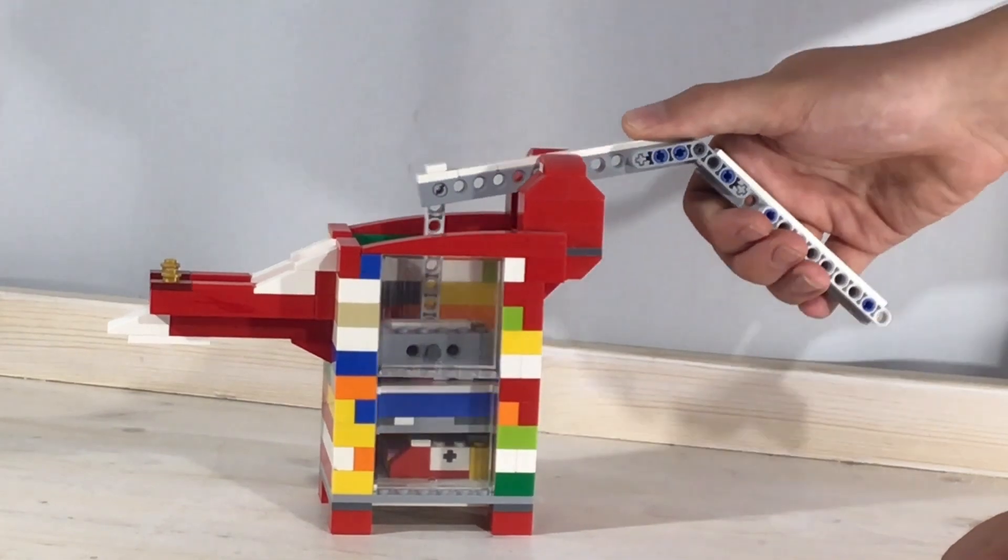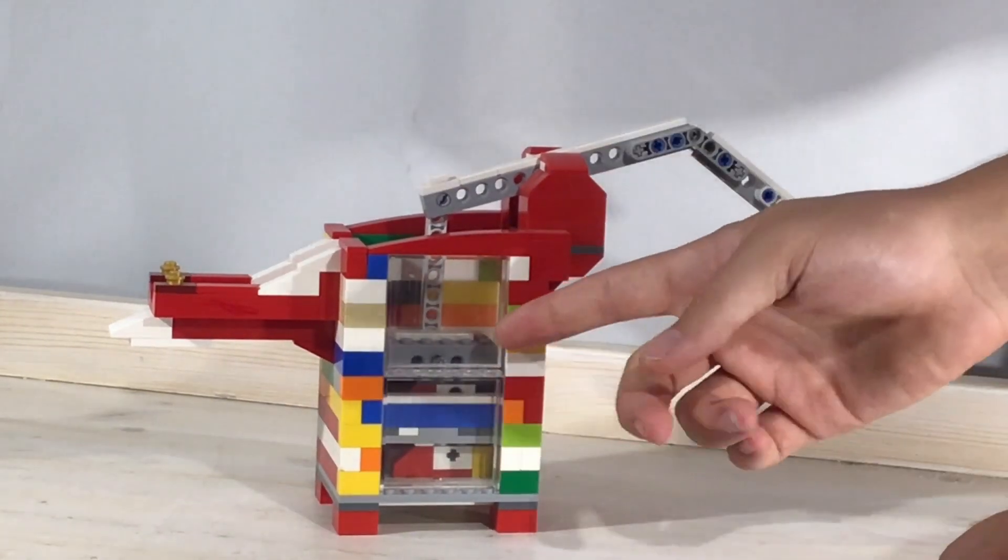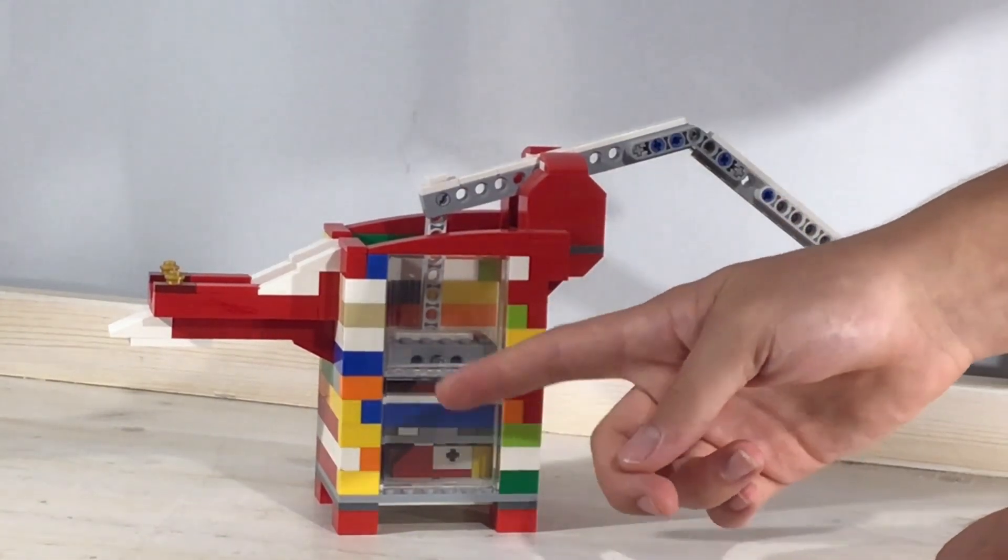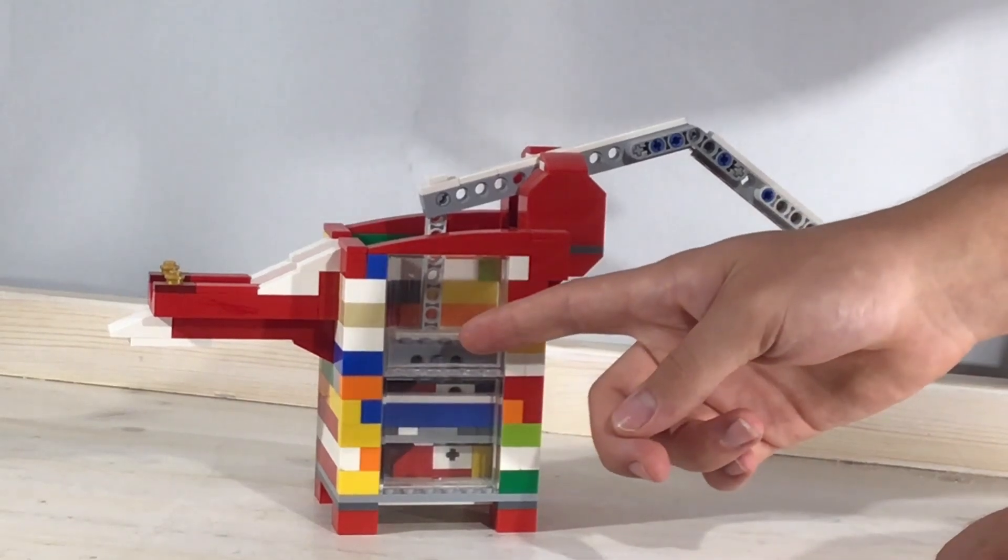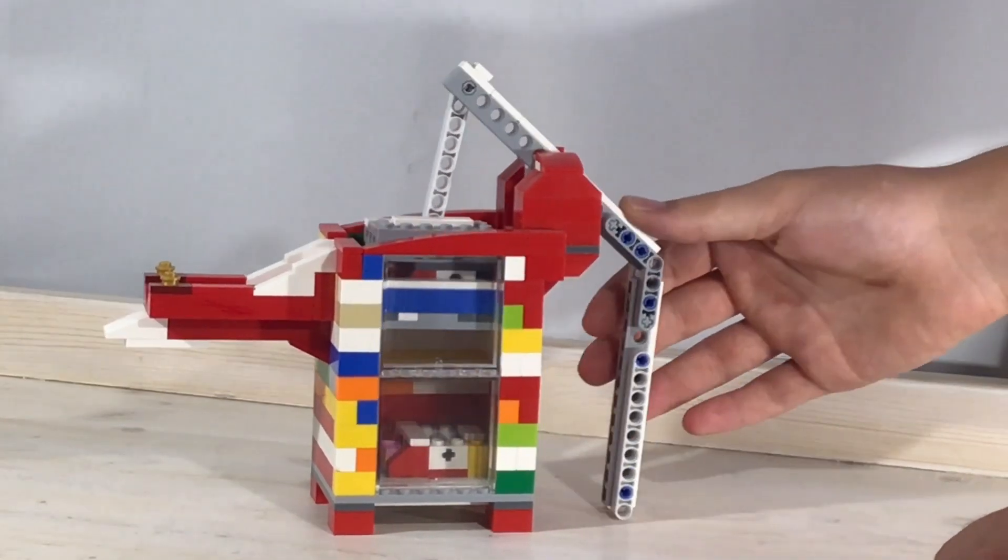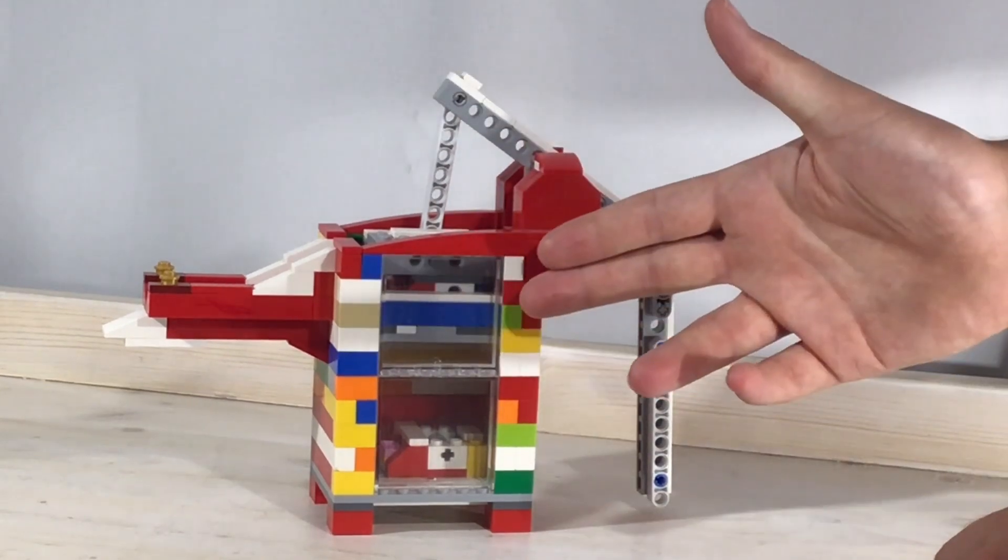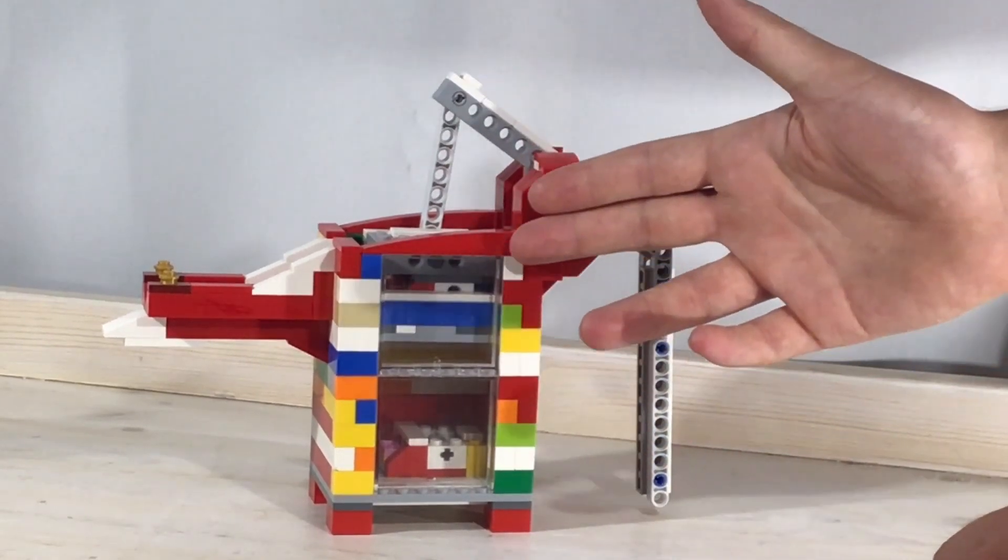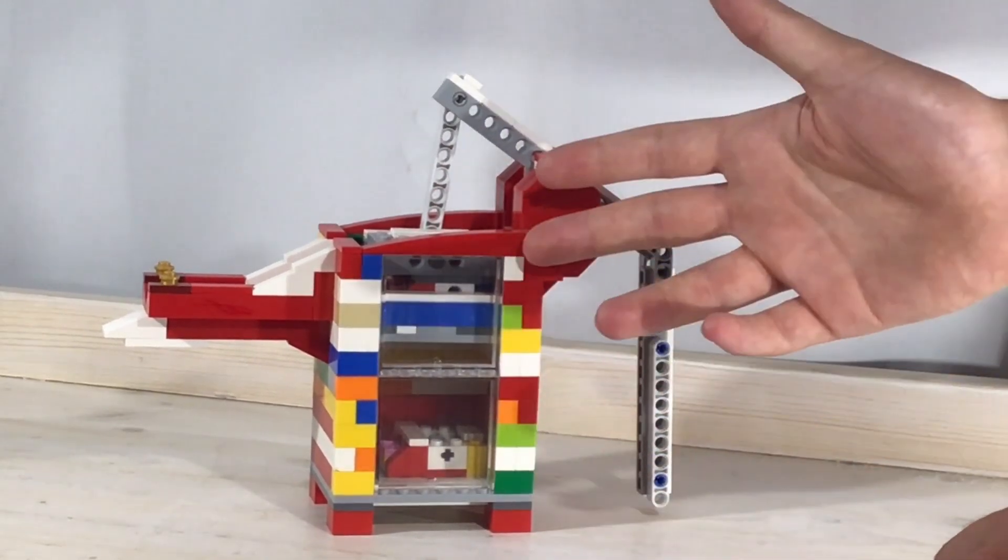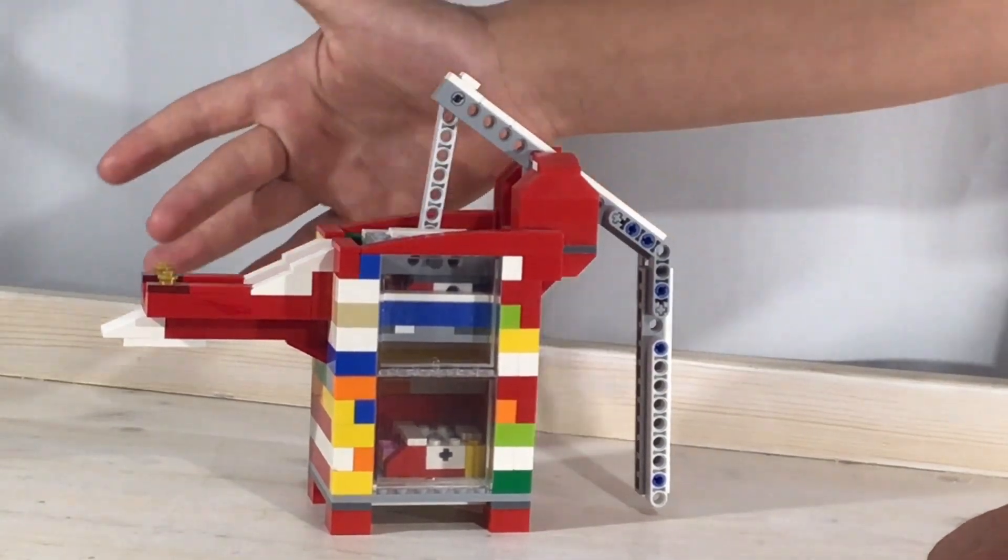So when you lower it down this valve opens and allows the water trapped in the middle to enter this upper section. When you raise it, it raises the water in the middle section and in this top section from the middle to the top, and it raises out the spout.